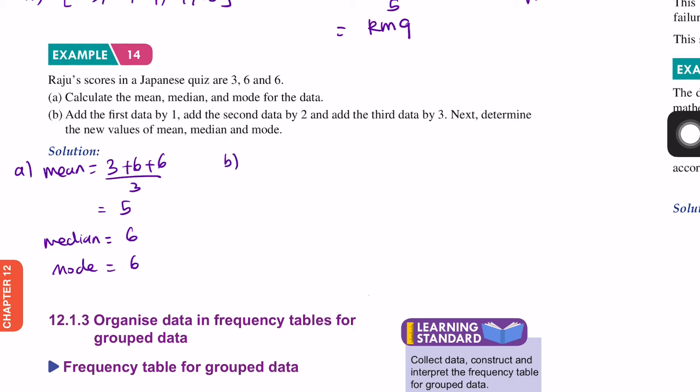Part B: Add the first data by 1, the second data by 2, and the third data by 3. So we get 3 plus 1 equals 4, 6 plus 2 equals 8, and 6 plus 3 equals 9. The new mean is 4 plus 8 plus 9 divided by 3, which equals 7. The median is 8, and there is no mode.